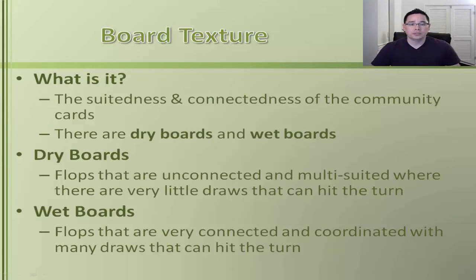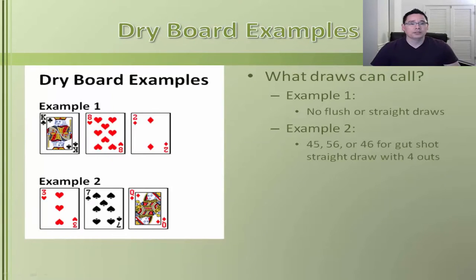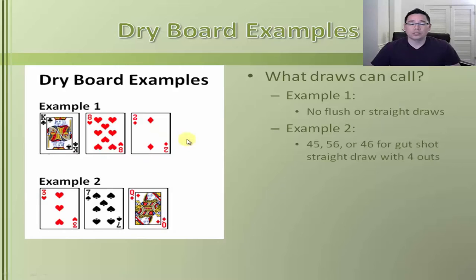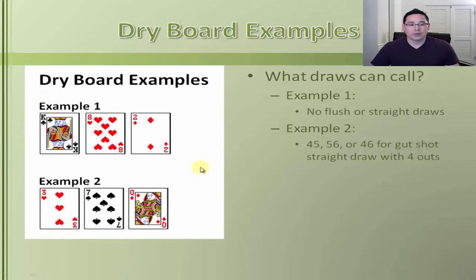Let's do some examples to highlight this. Dry boards first. Example one is a very dry board — probably about as dry as it gets: King of clubs, Eight of hearts, Two of diamonds. Looking at this, what draws can really call on the flop expecting to hit on the turn? There are no flush draws and no straight draws, making this a very dry flop.